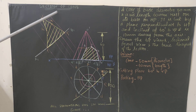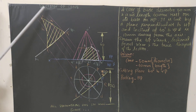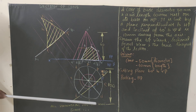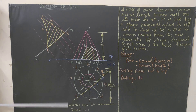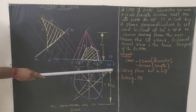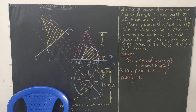Write the title 'Section of Cone' in capital letters with a text height of 10 mm. Below, after completing everything, write two lines: 'All dimensions are in mm' and 'Scale 1:1' with text height of 5 mm. Use a pro-circle to draw a circle and write the question number. Draw the border using HB pencil: 20 mm from left, 10 mm from top, 10 mm from right, and 10 mm from bottom.